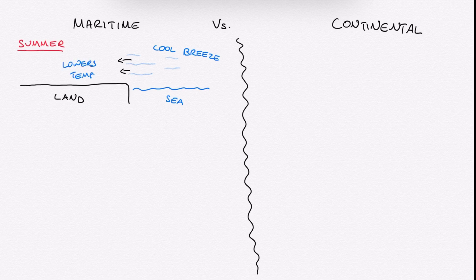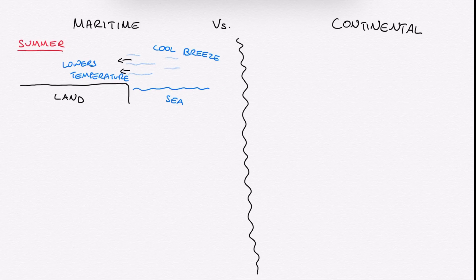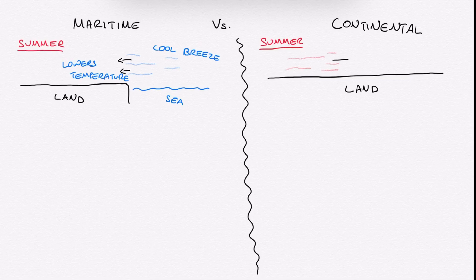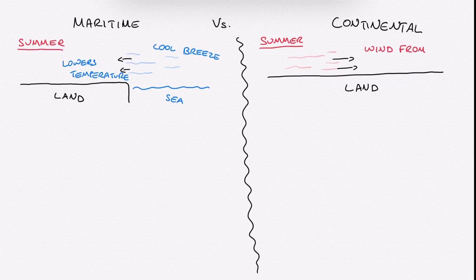The opposite, however, happens in continental areas. If the wind is blowing from the land, the land heats up much faster, and therefore it is going to be a warm wind that is going to be coming towards you and it's going to be increasing your temperature. This is why the center of continents tend to be much warmer than the coastal areas.